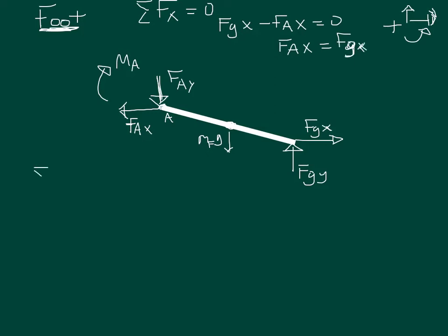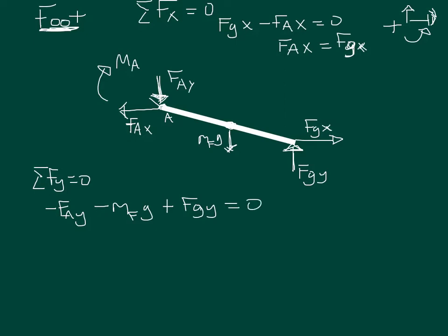We do the same thing in the y direction, summing forces in y and setting equal to zero. We have a negative force at the ankle in y (drawn acting downward), a negative gravitational force at the center of mass (also downward), and a positive ground reaction force F_gy acting upward. Solving for F_ay, we get F_ay equals the mass of the foot times gravity minus the ground reaction force in y (F_gy).